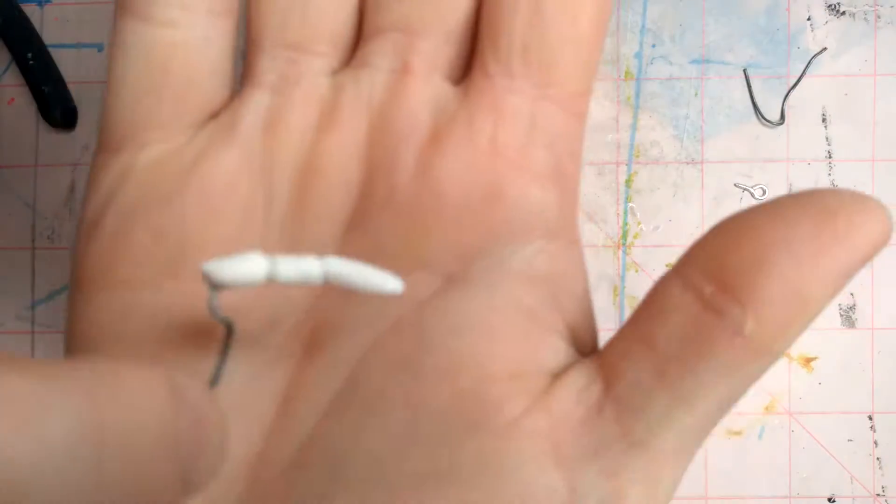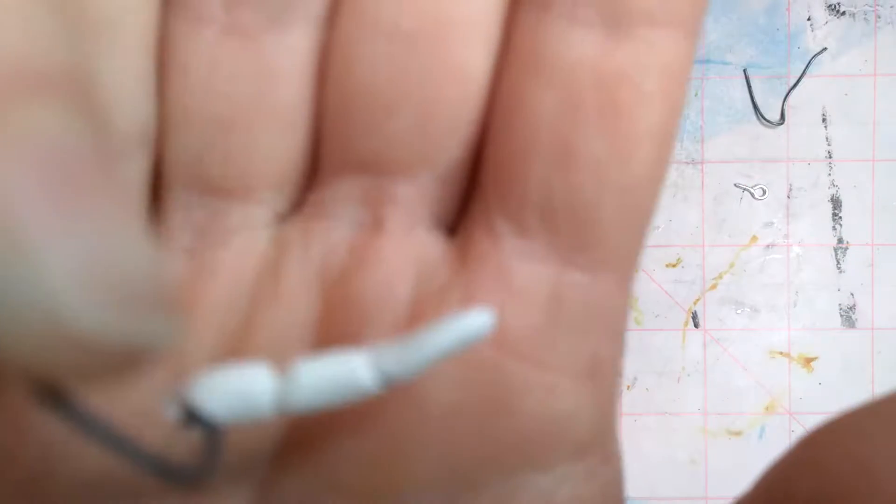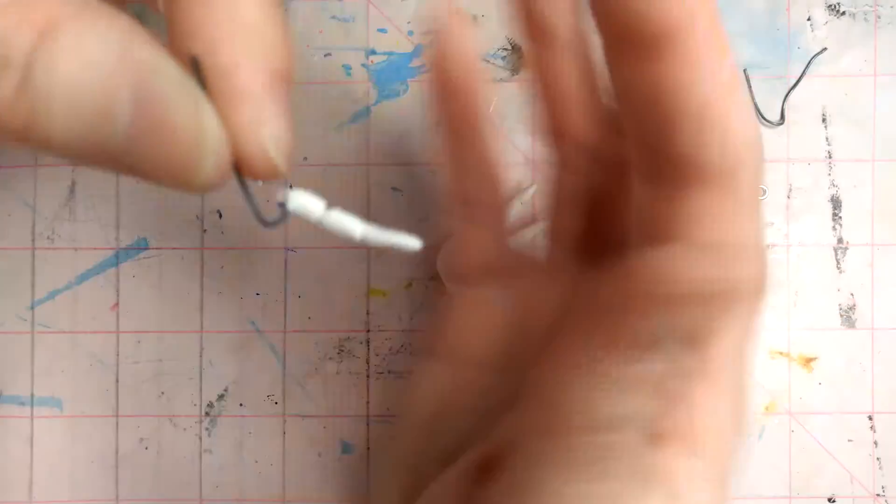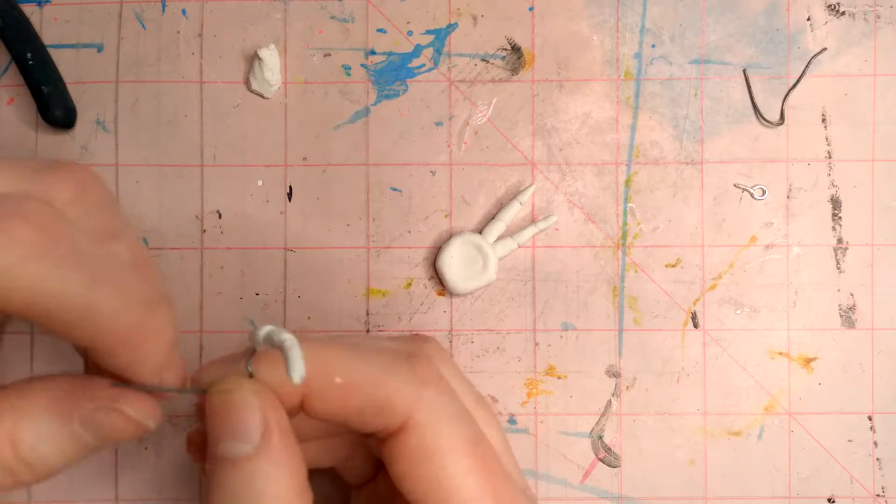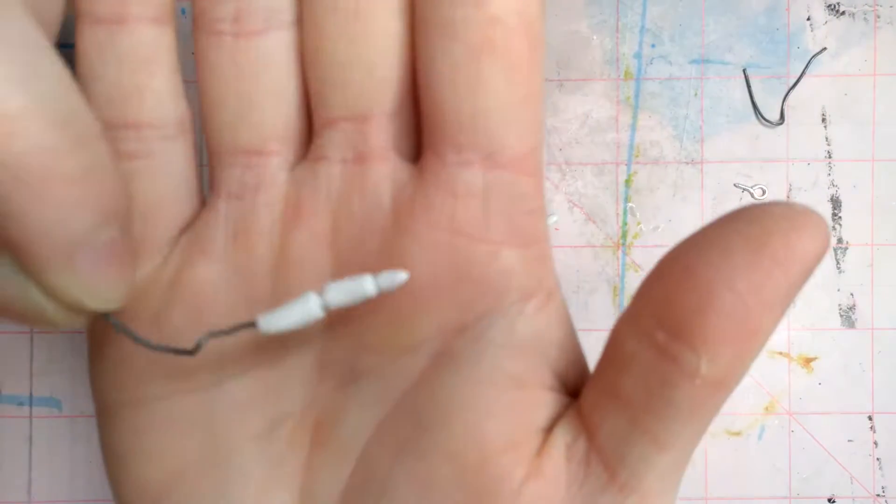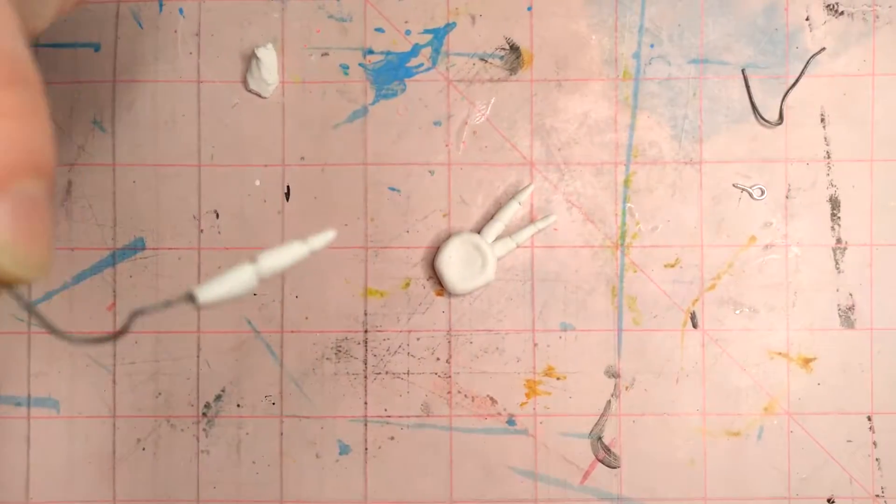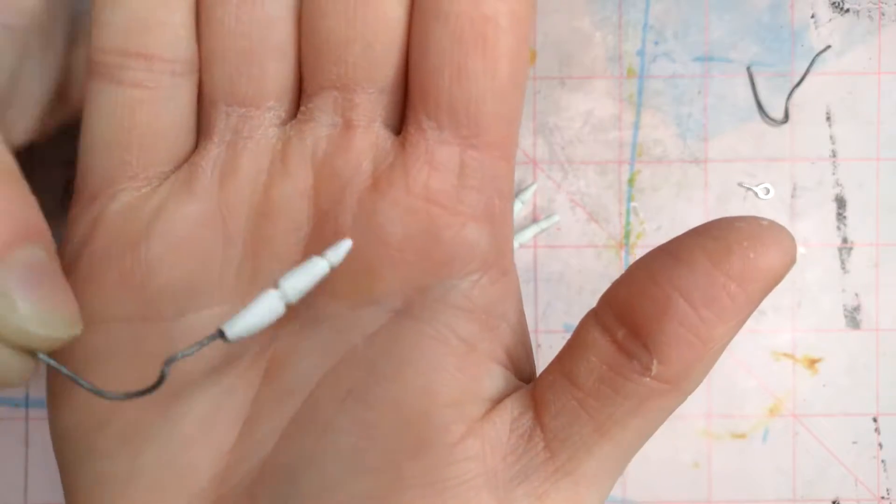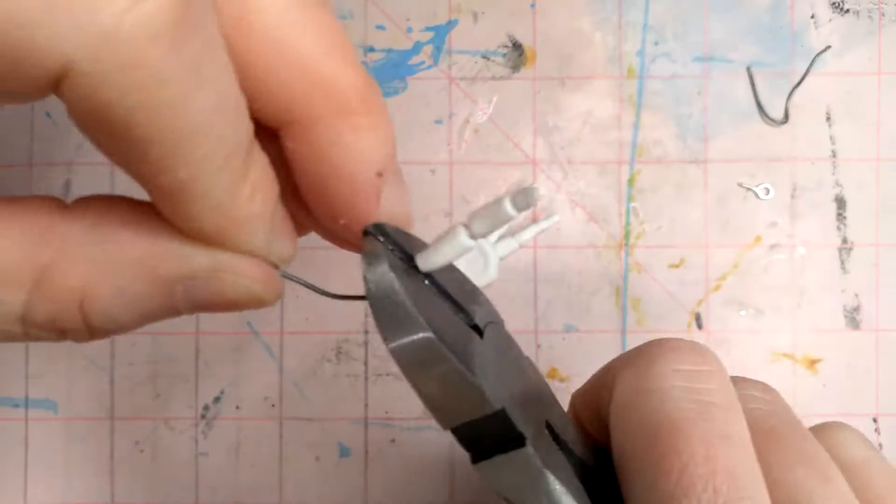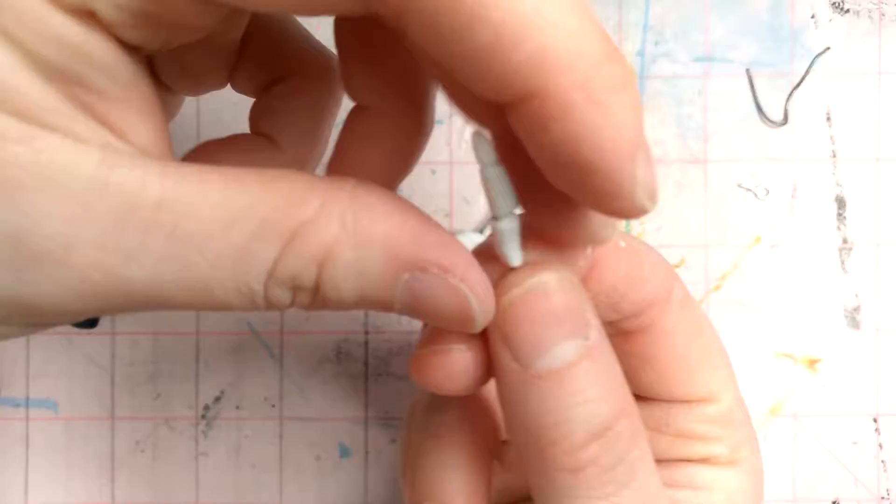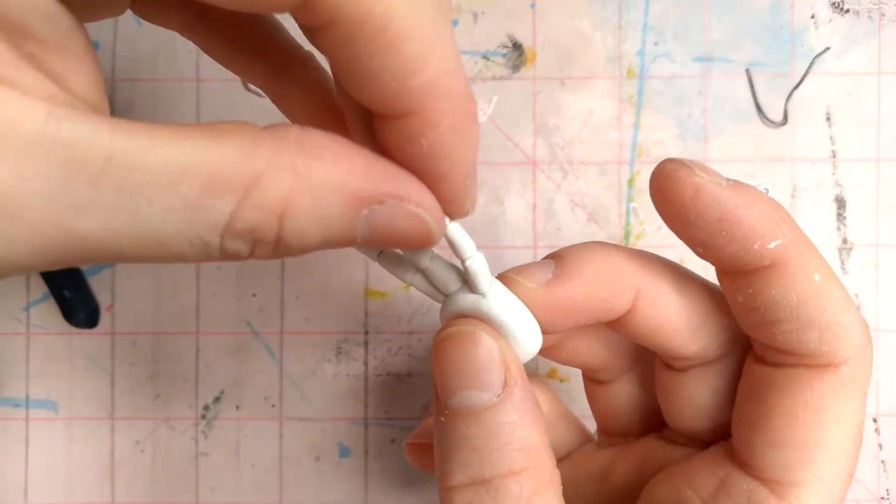But you might be able to hear Voss in the background if the mic picks her up. So each finger you get to watch me make each individual finger and Voss is talking in the background. She wants to make this puppet too. And we're just making those fingers.